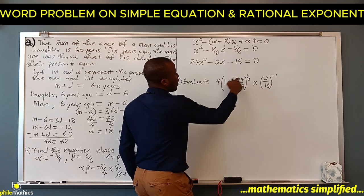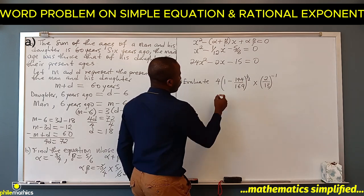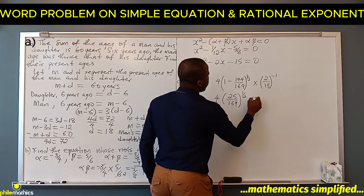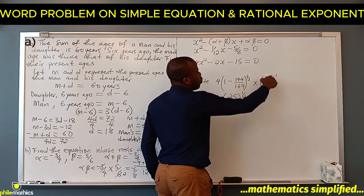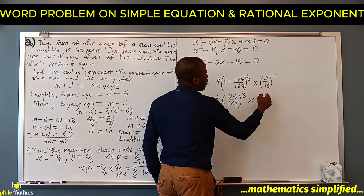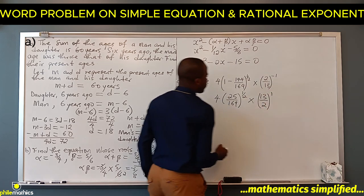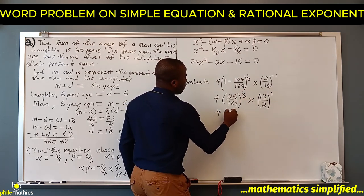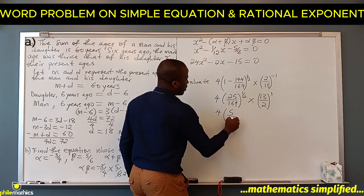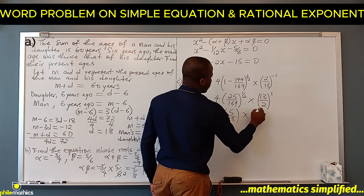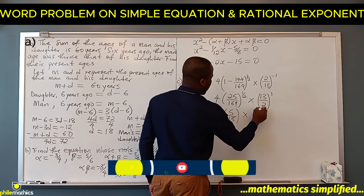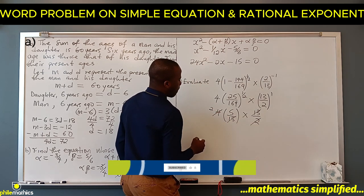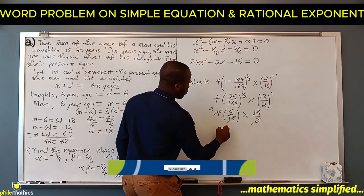169 minus 144 equals 25. We have 25 over 169 raised to the power of 1 over 2. The square root of 25 is 5 and the square root of 169 is 13, giving 5 over 13. After cancellations, we get a final answer of 10.